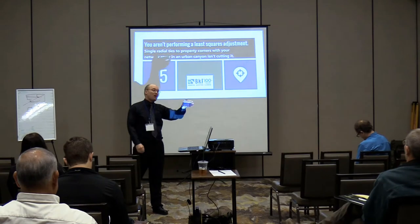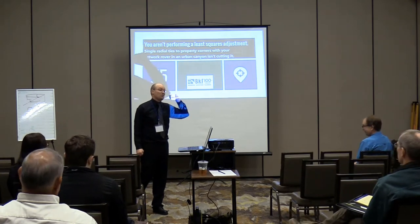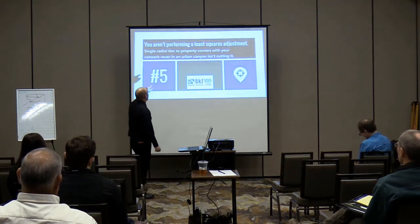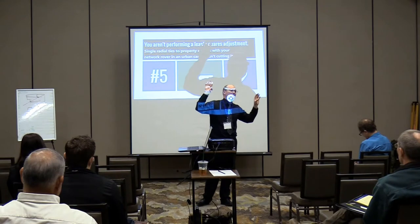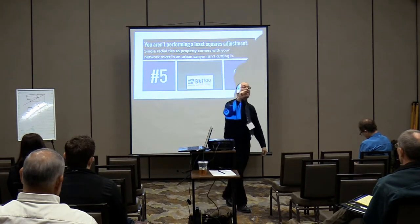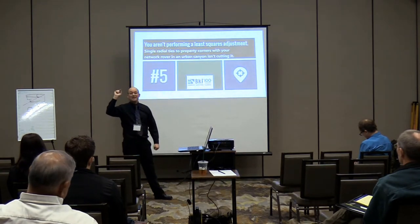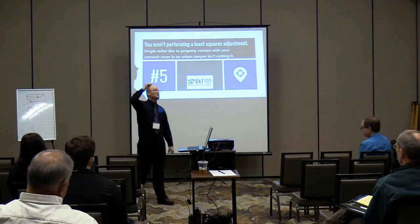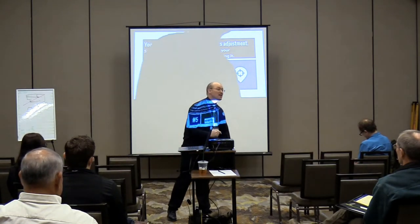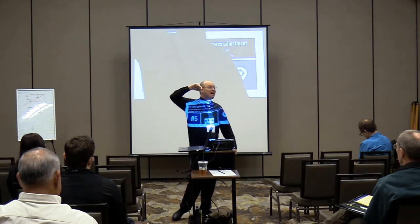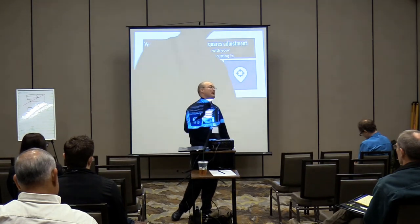If I'm ever on the other side of a lawsuit from you and you do that, I am going to roast you. I don't care how good the job you did on the rest of the survey — if you screw that up, I'm going to make you look stupid. The spec says every time you do a land title survey, you've got to do a least squares adjustment. You can't do that in CAD. If you're in the land title survey business, you better have least squares adjustment software in your office. I put a note on my survey that says I did a least squares adjustment — here's my measurement error at the 95% confidence level.